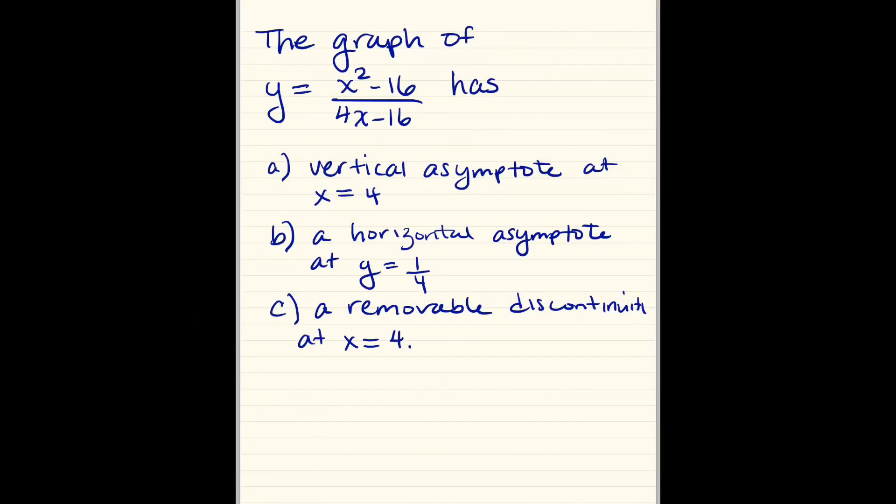The graph of y equals x squared minus 16 over 4x minus 16 has a vertical asymptote at x equals 4, a horizontal asymptote at y equals 1 fourth, or a removable discontinuity at x equals 4. First thing that you have to see is that the top gets factored to x minus 4 times x plus 4, while the bottom gets factored to 4 times x minus 4.